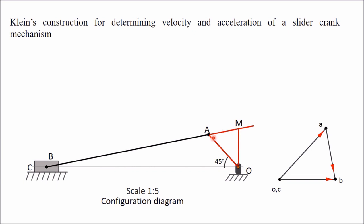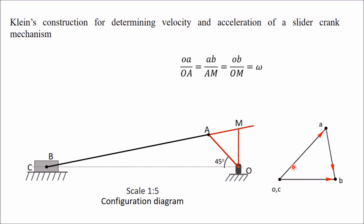Triangle OAM and triangle OAB are similar triangles, and therefore their ratios will be the same: small OA divided by capital OA equals AB divided by AM equals OB divided by OM. The ratio small OA divided by capital OA equals omega, and therefore these two ratios will also be equal to omega.